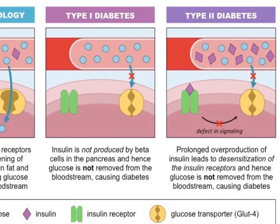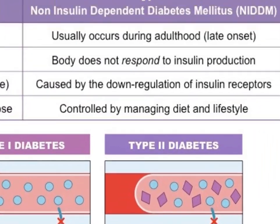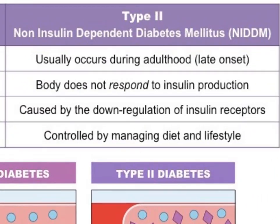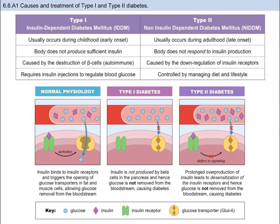On the other hand, type 2 diabetes is caused by the body no longer responding to insulin production, and glucose is not removed from the bloodstream in a regular manner. Typically it happens later in life, and there are strong correlations of increased risk for type 2 diabetes with weight, diet, and the amount of fatty acids in the blood. For treatment, a person with type 2 diabetes should monitor their blood glucose levels using a blood monitor, and they manage their diet and exercise. In some cases, they can take medicines that help the body facilitate glucose absorption.